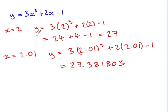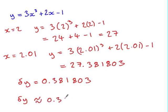So the difference in y values is 0.381803. Now remember we just found that delta y was approximately equal to 0.38 using the small change formula, which for most practical purposes is accurate enough. It's accurate to two decimal places and much easier to use and does not require a calculator.